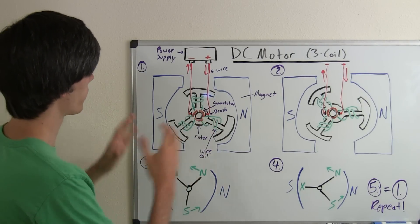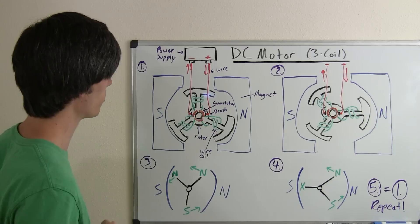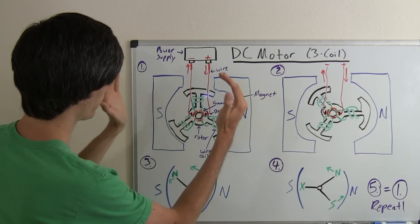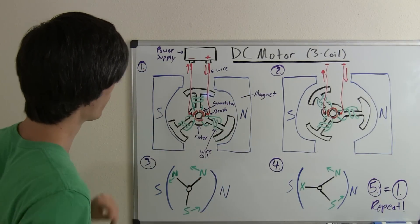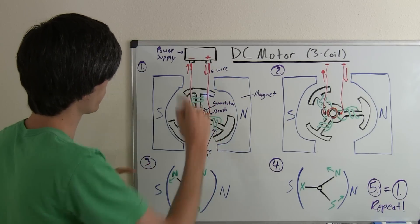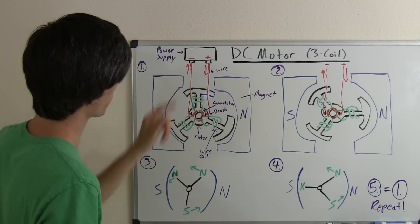Okay so what we've got set up here is a DC motor. So we've got a magnet which is a permanent magnet and it is stationary. It does not move and we have a power supply here.